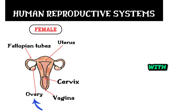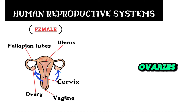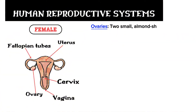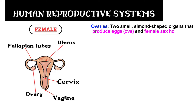Let's start with the ovaries. A female has two ovaries — one on the left and one on the right side. Ovaries are two small almond-shaped organs that produce eggs, also known as ova, and female sex hormones including estrogen and progesterone.